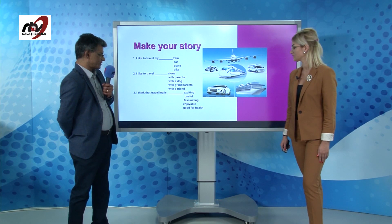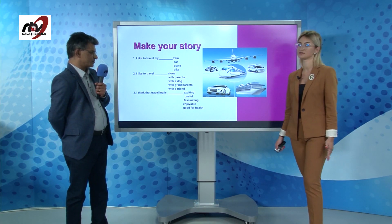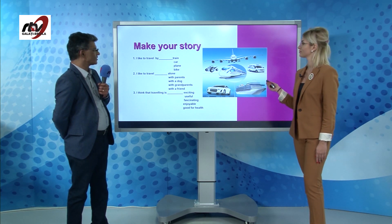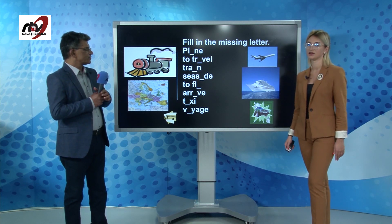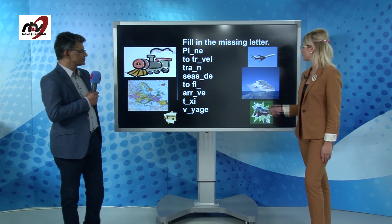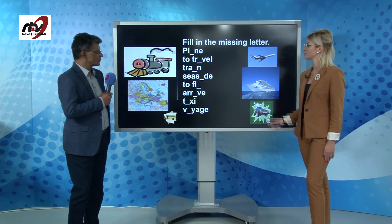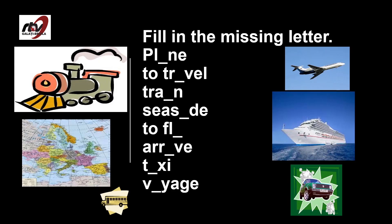Traveling is very useful because we learn a lot of new things. For the next activity, fill in the missing letters to discover the words corresponding to the pictures. The first missing letter gives us 'plane', the second 'travel', the third 'train', then 'seaside' with the letter Y to get 'fly', and finally 'arrive' for the last verb.